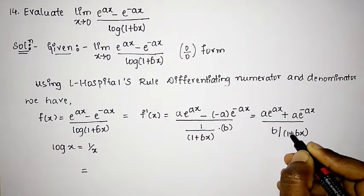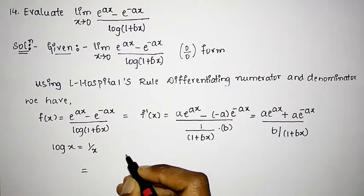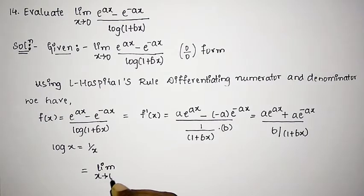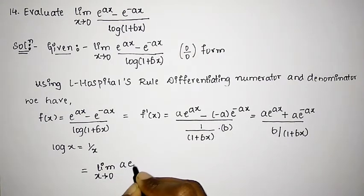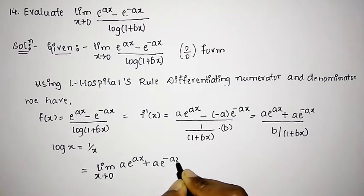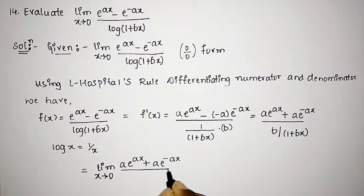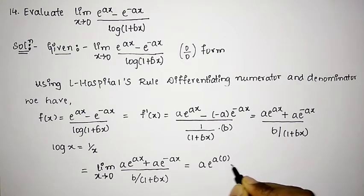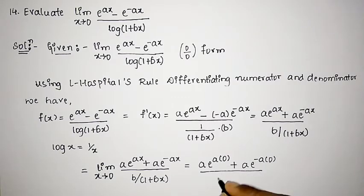Since a and b are constant terms, we shall directly apply the limit. That is, limit as x tends to 0 of a into e raised to ax plus a into e raised to minus ax, whole divided by b divided by 1 plus bx. Wherever there is ax, substitute x equals 0: a into e raised to 0 plus a into e raised to 0, whole divided by b divided by 1 plus b into 0.